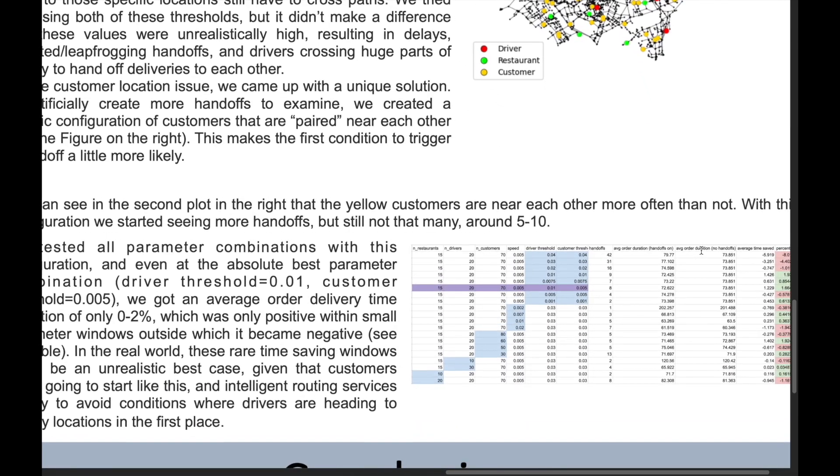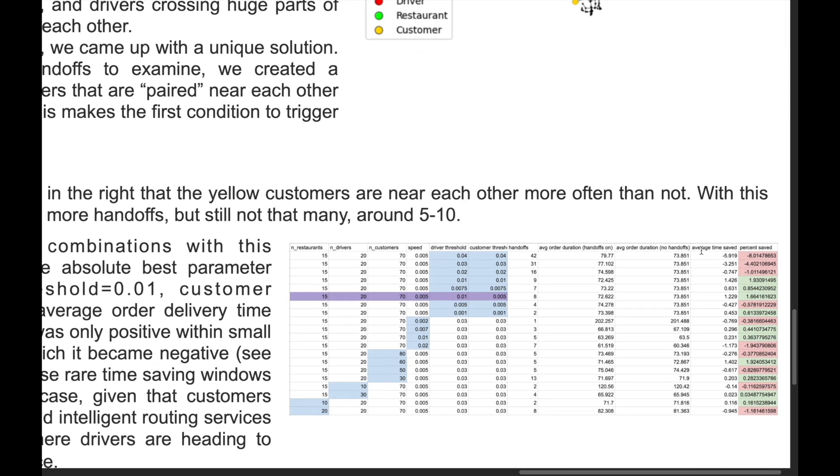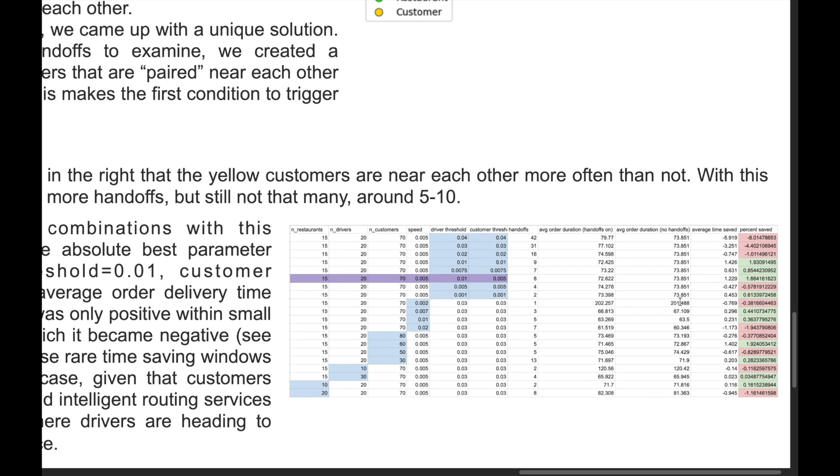After letting the simulation run for a while, we noticed that handoffs were extremely rare due to the necessary conditions we had to meet, which are drivers crossing paths that both happen to be going to very similar locations.